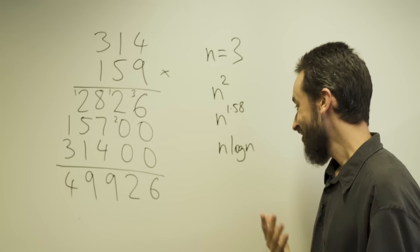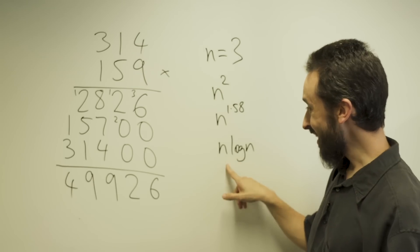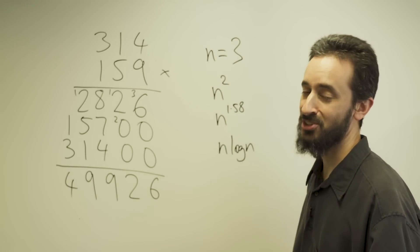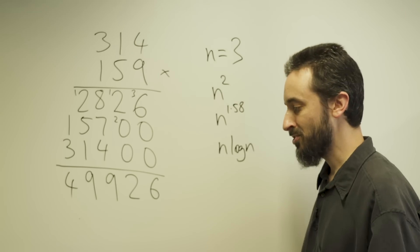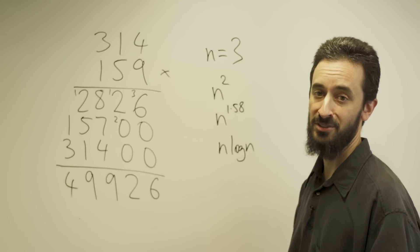The question is, how big does n have to be for this algorithm to actually be faster than the previous algorithms? The answer is we don't know. It could be billions of digits, it could be trillions, it could be much bigger than that. We really have no idea at this point.